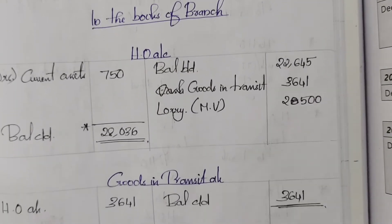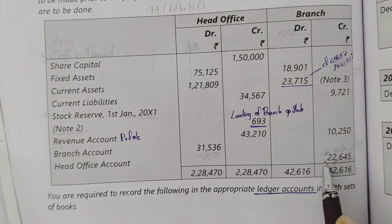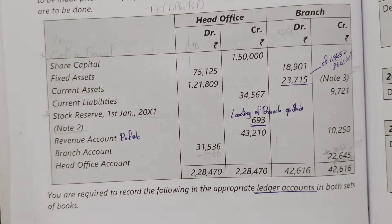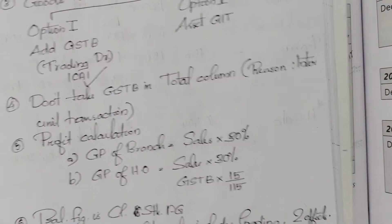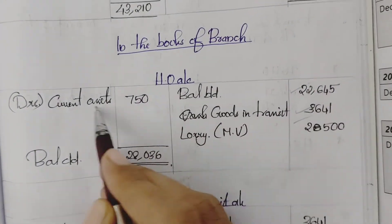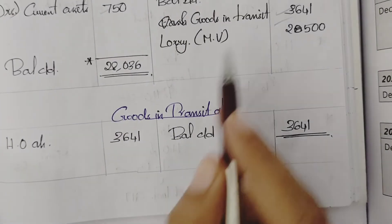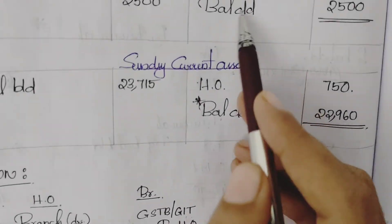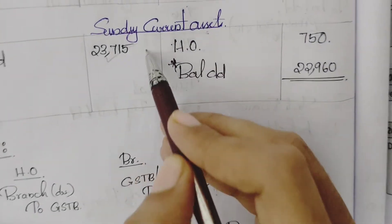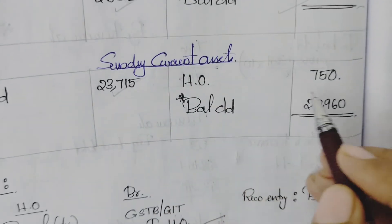In the books of the branch, the head office account is repaired — credit balance of $22,645 brought down. Goods in transit account is debited to head office account: $3,641. Lorry account is debited to head office account; head office account balance is carried down. Current asset account balance in the balancing figure is $23,715. Head office collected from debtors — $750 — so debtors account is credited; current asset balance carried down.